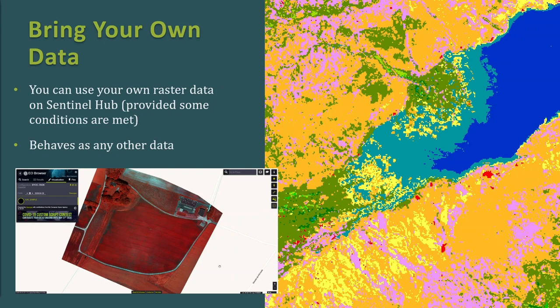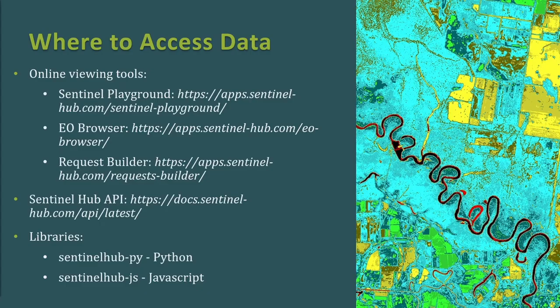Another handy feature is Bring Your Own Data. You can use your own raster data on Sentinel Hub provided some conditions are met, like the image being in TIFF format. Once set up, it basically behaves as any other dataset — it can be anything like a scene classification map, a probability mask, or whatever you need.